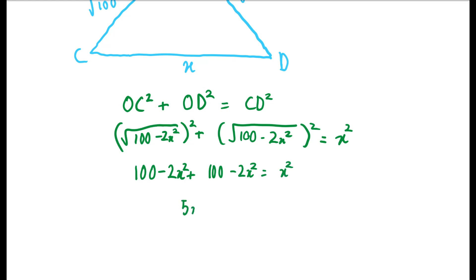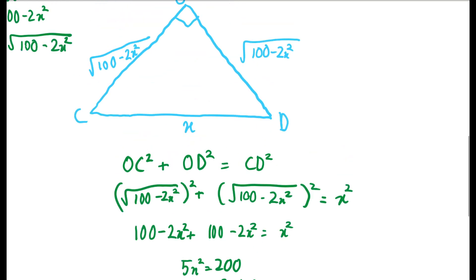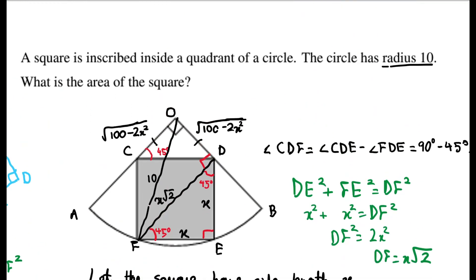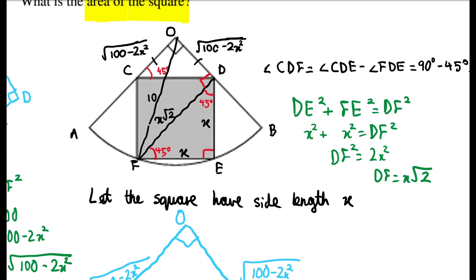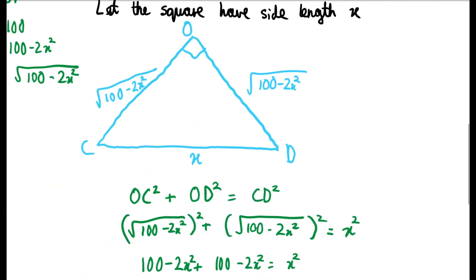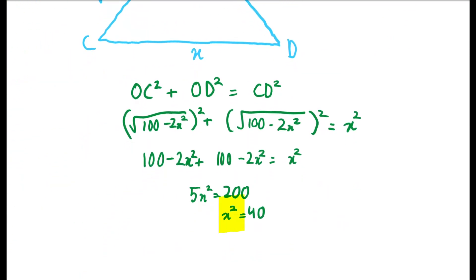Solving for x, we get 5x squared equals 200, or x squared equals 40. The question asked us to find the area of the square, and clearly a square with side length x has area x squared. So our answer is 40.